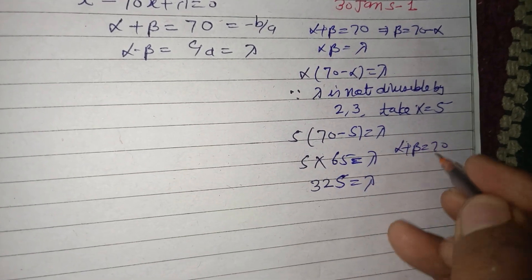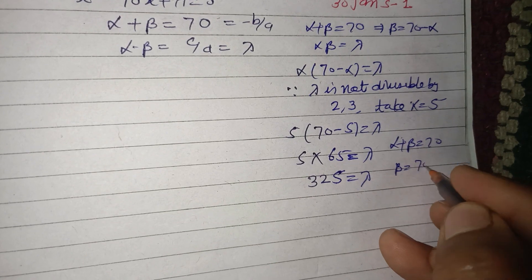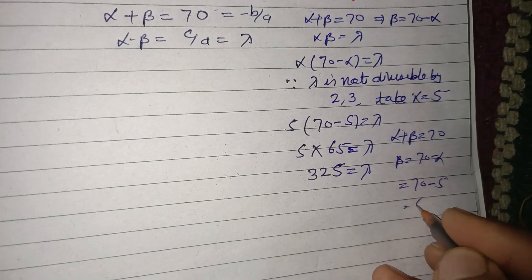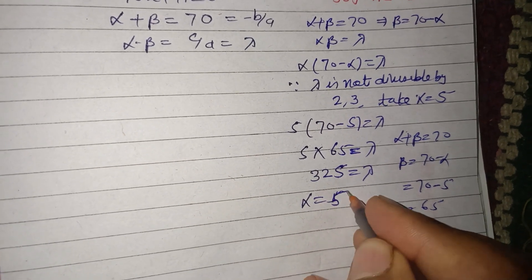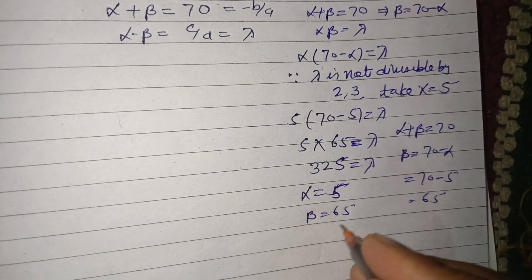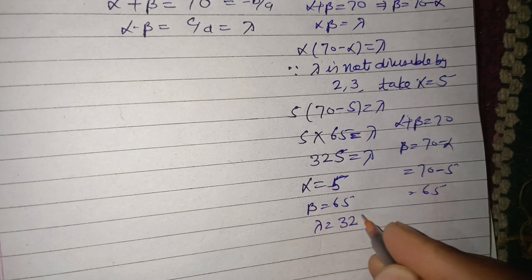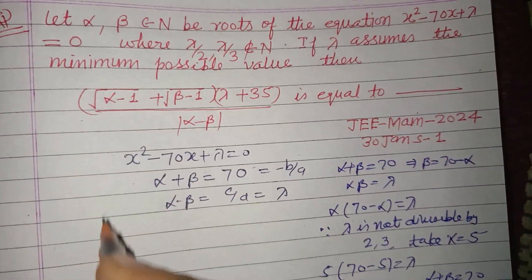If alpha is 5, then alpha + beta = 70, so beta = 70 - alpha = 70 - 5 = 65. So the values are alpha = 5, beta = 65, and lambda = 325.